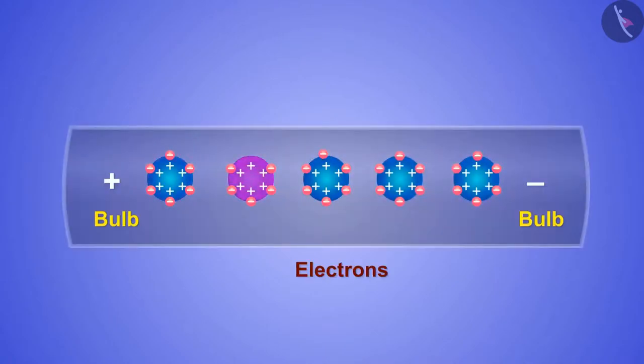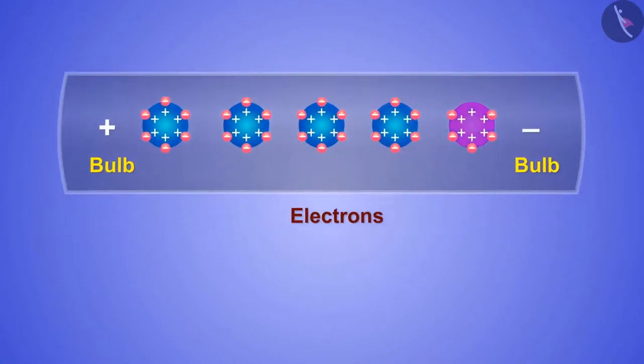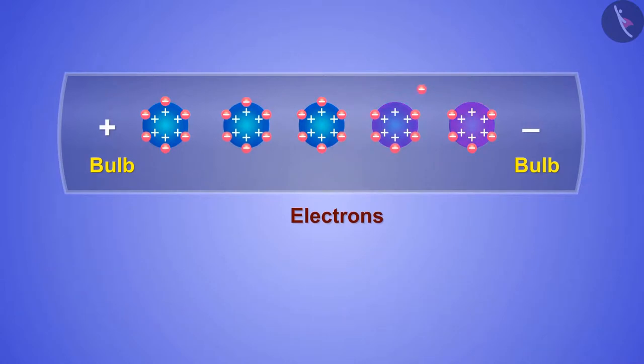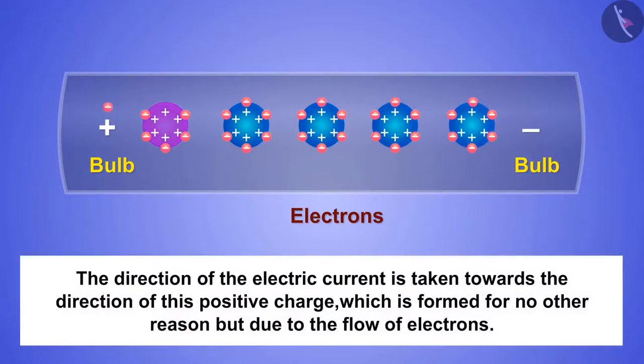Due to the flow of electrons, a positive charge is generated in the metallic wires. The direction of this charge, which appears to be in the opposite direction of the electrons—here the direction of the electric current is taken towards the direction of this positive charge, which is formed for no other reason but due to the flow of electrons.